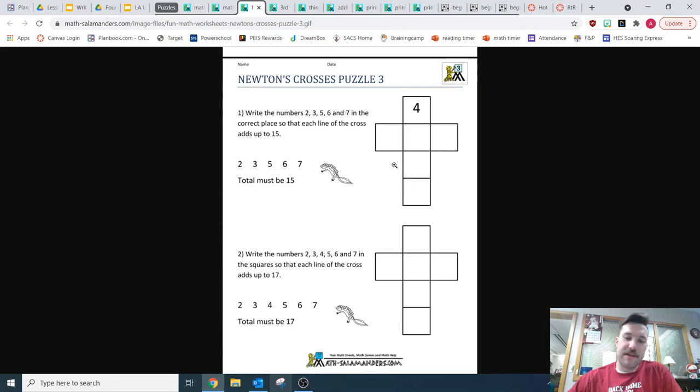So in the first one, you've got 2, 3, 5, 6, 7, and then 4 is in there. And then the next one, you have 2, 3, 4, 5, 6, 7. So you have the same numbers both times. But you should be able to get 15 here, 15 here, 17 here, and 17 here.